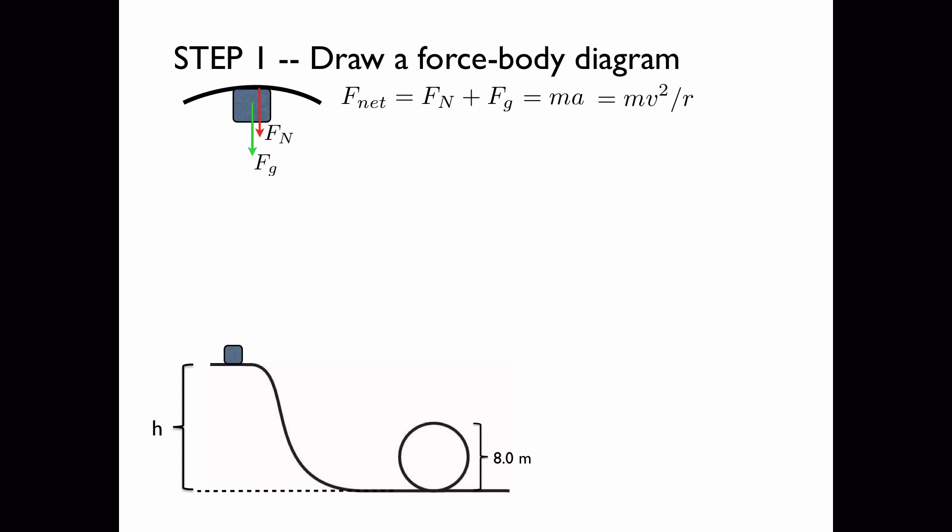Now here's the condition that the block has the minimum velocity. If the block has the minimum velocity, then we want to set the normal force equal to zero. If the block is going faster than its minimum, then it's still in contact with the ramp and it's pushing up against the ramp and the ramp's pushing down on it. But at the point where it's just sort of floating at the top of its path but still in contact, the normal force is equal to zero.